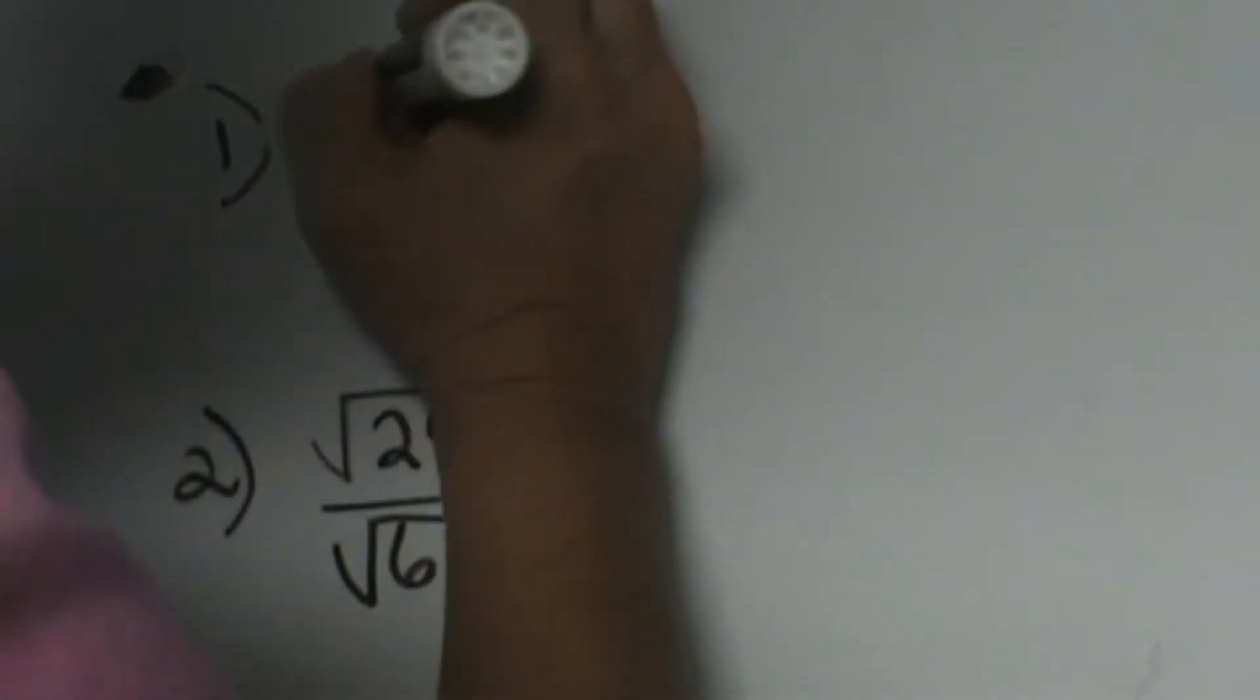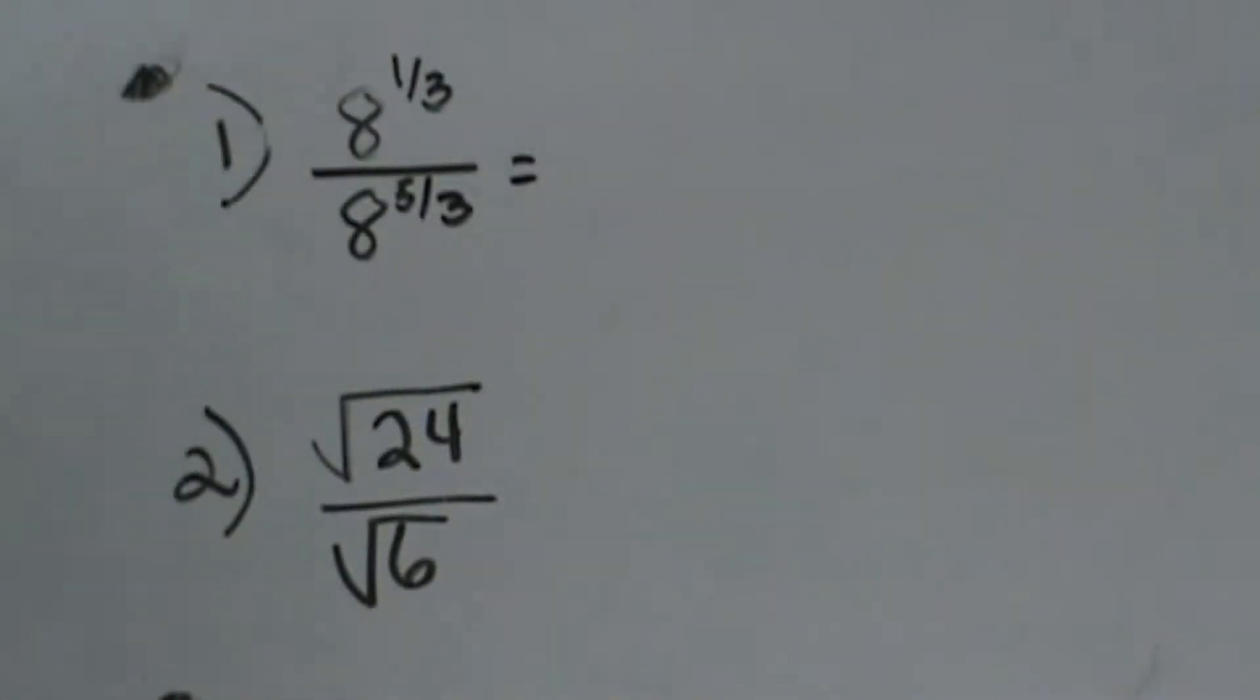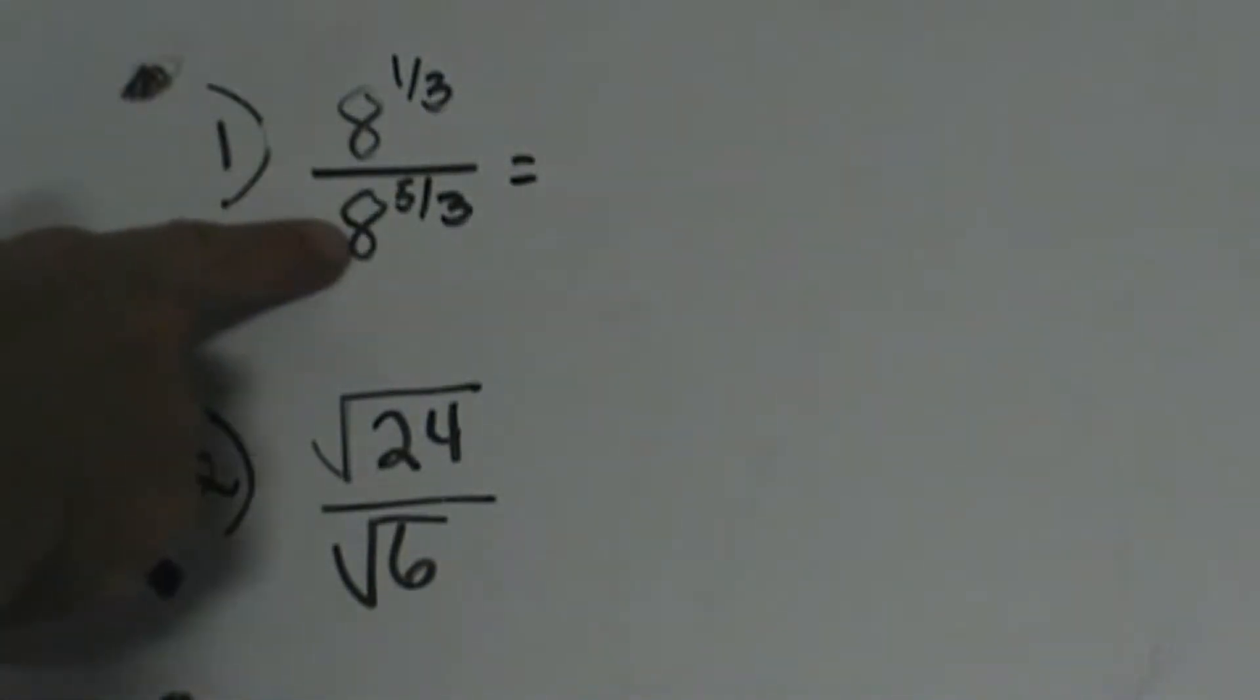Look at one like this: 8 to the 1/3 over 8 to the 5/3. If we are dividing those, we have our like bases, so all I'm going to do is subtract my exponents.